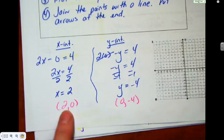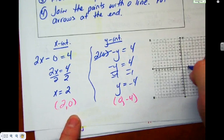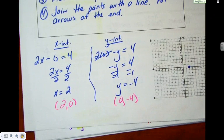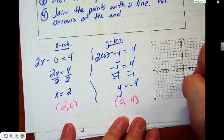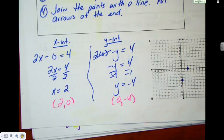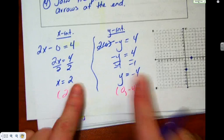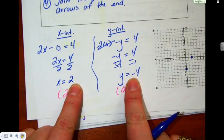There's step 1 and 2. Step 3 is we're just going to plot the points. 2, 0 means 2 to the right, 0 up and down. Here's a hint. That point has to be on the x-axis. Why? Because it's the x-intercept. So if you're putting it somewhere else than on the axis, you've done something wrong. Where's this point going to go? Well, 0 left and right, 4 down to negative 4. Again, it has to be on the y-axis.